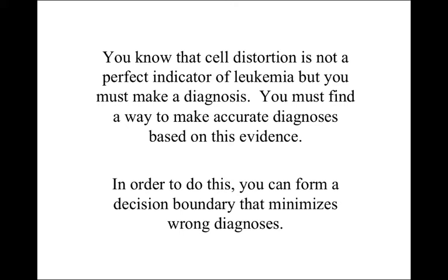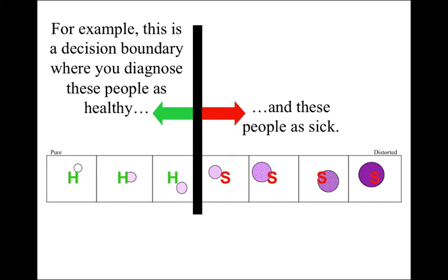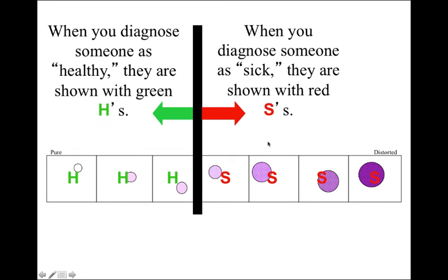You must find a way to make accurate diagnoses based on this evidence. In order to do this, you can form a decision boundary that minimizes wrong diagnoses. For example, this is a decision boundary where you diagnose people on the left side as healthy and people on the right side as sick. When you diagnose someone as healthy, they are shown with H's; when you diagnose someone as sick, they are shown with red S's.